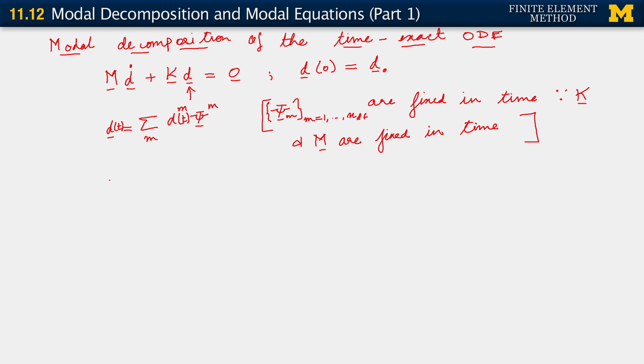But you see what that also allows us to do. What that immediately lets us say is that d dot is now sum over m, d dot m function of time, psi m, sum of course running from one to number of degrees of freedom. And we're going to substitute both these decompositions into our time exact ODE. So what this implies then is, let me just say substituting.